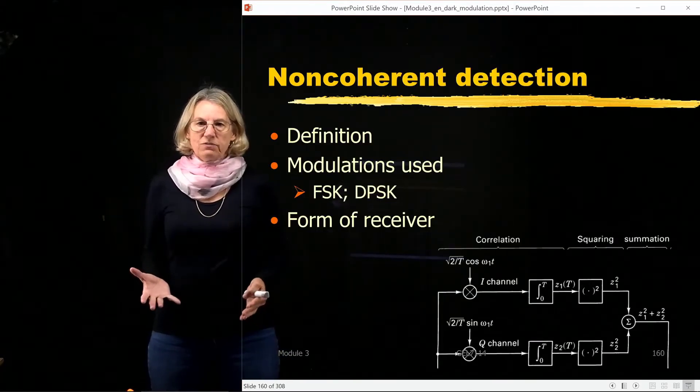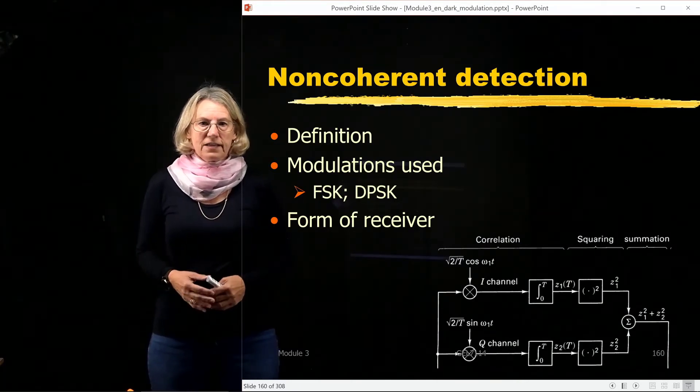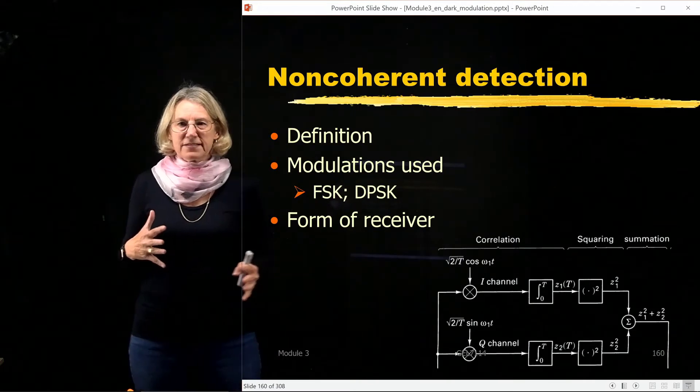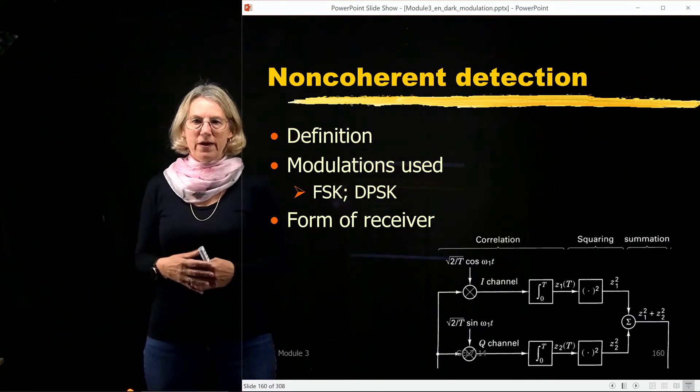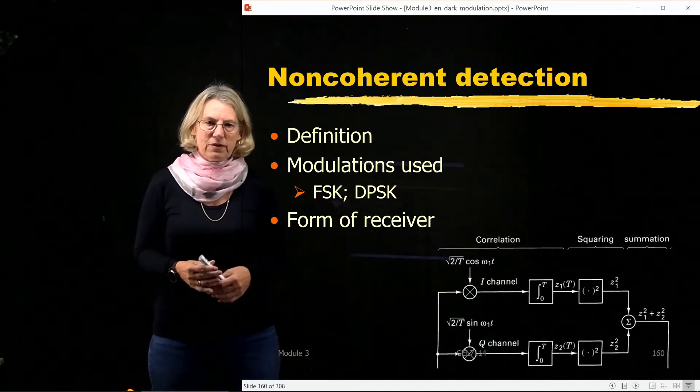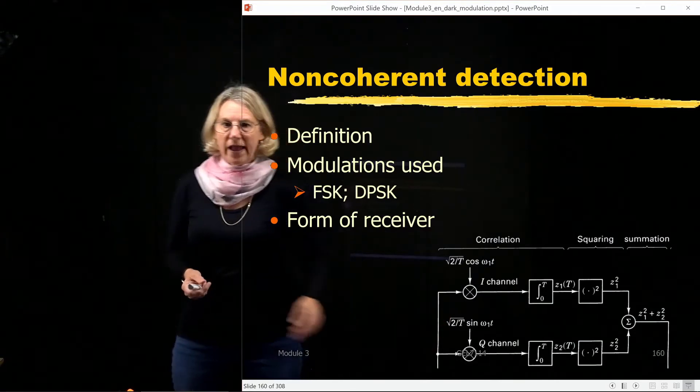So first of all, for non-coherent detection, we change the form of the receiver. And it could be FSK, it could be DPSK, and their implementations could be different. But there is something that the idea of what we're trying to accomplish. And the idea of what we're trying to accomplish is, suppose we had an in-phase and quadrature branch.